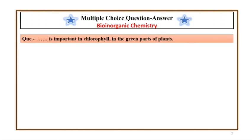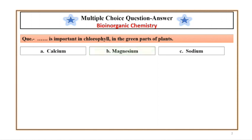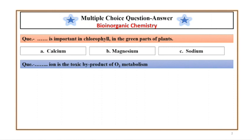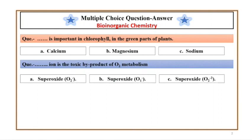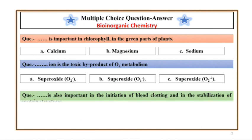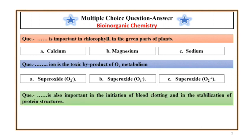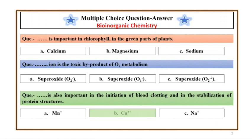Dash-dash is important in chlorophyll in the green parts of plants. Answer: Magnesium. The toxic by-product of O2 metabolism — Answer: A. Superoxide O2-. Dash-dash is also important in the initiation of blood clotting and in the stabilization of protein structures. Answer: Ca2+.